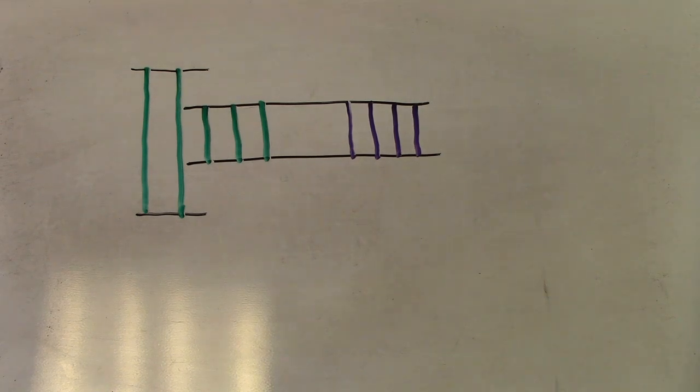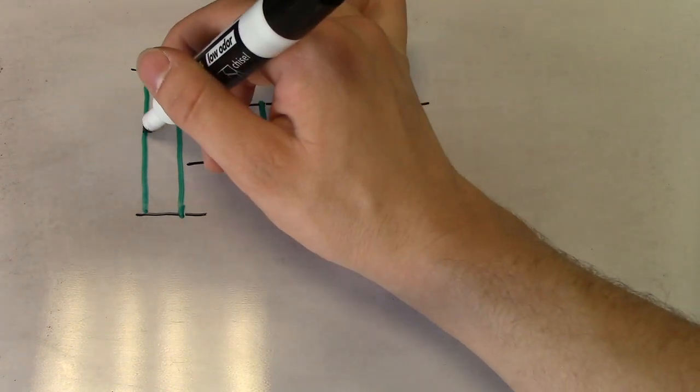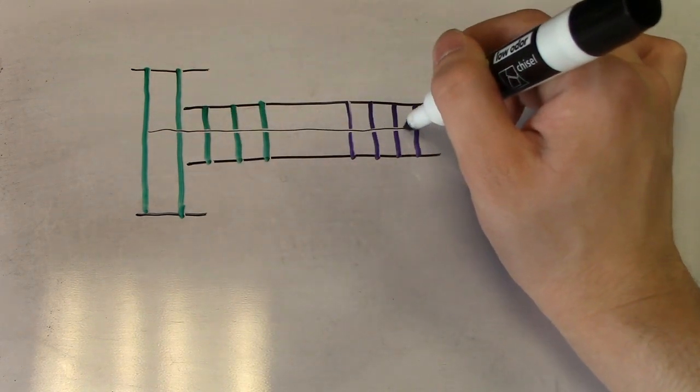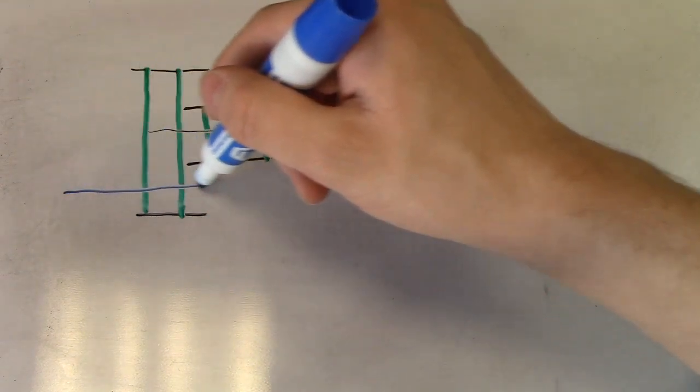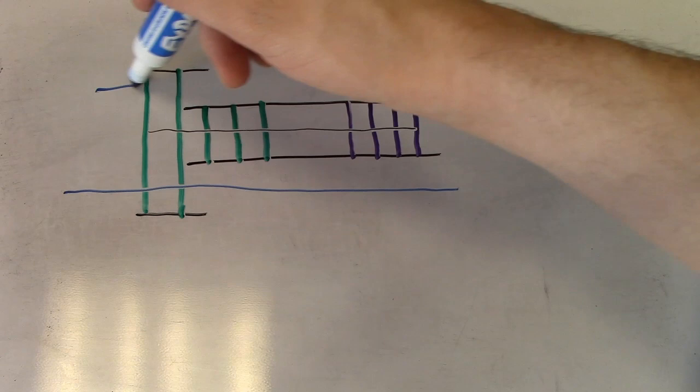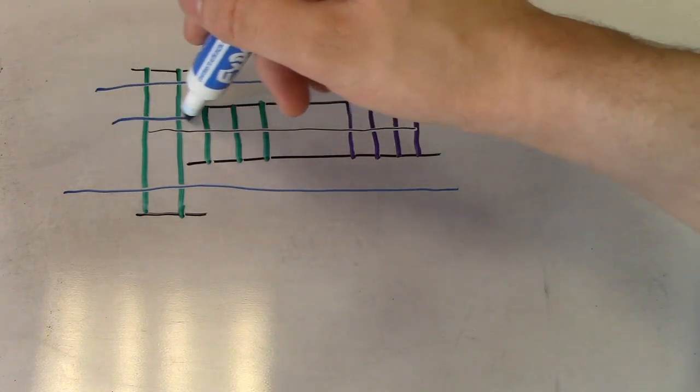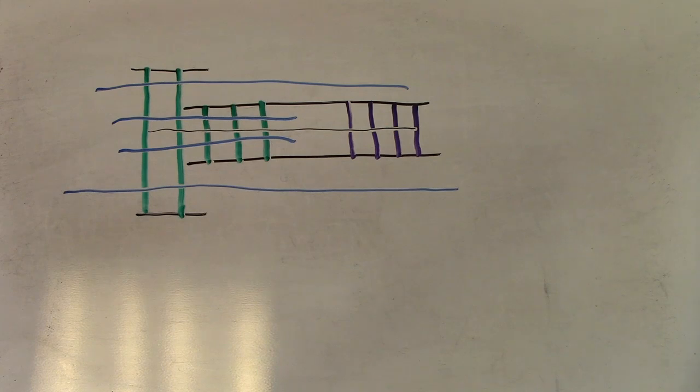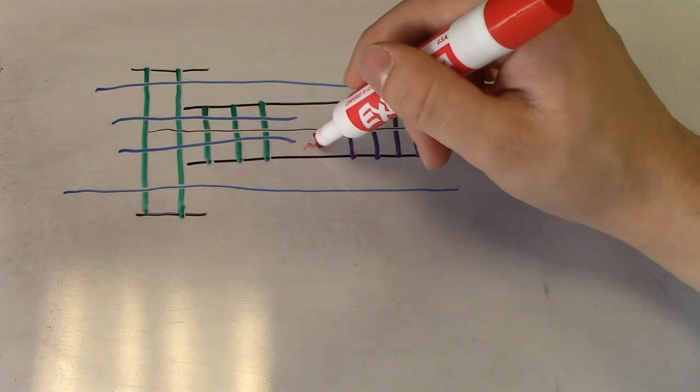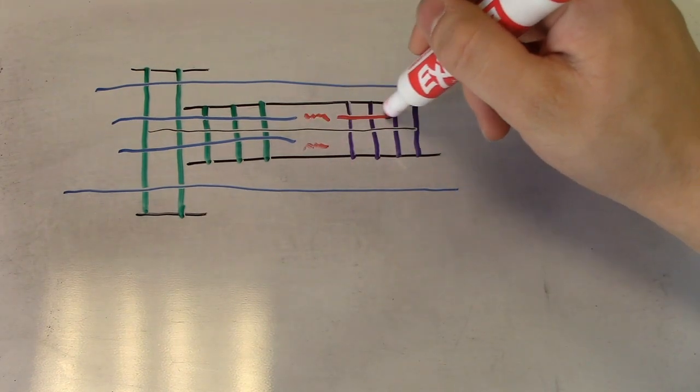This ratio of air passing around the engine to that going into it is known as the bypass ratio. The higher the bypass ratio, the more efficient the aircraft, and also the more it behaves like a turboprop. Since no air passes around a turbojet, turbojets can be considered as turbofans with a zero bypass ratio.